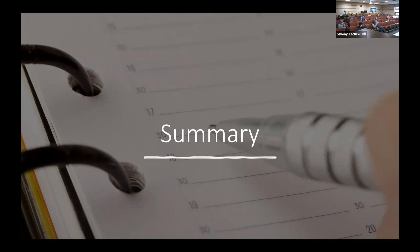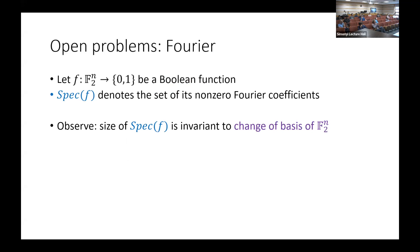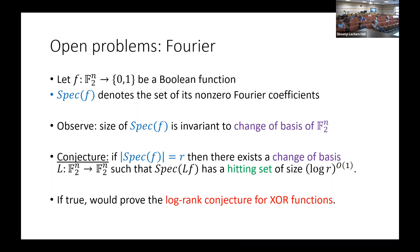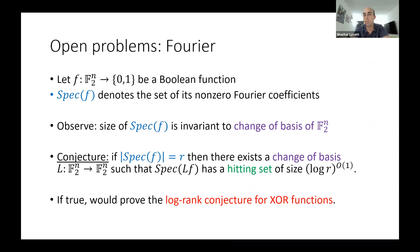Question: In the Fourier conjecture, how relevant is the boolean nature of the function — does it make sense for functions taking values in an interval? Answer: If there's no constraint on the range, the conjecture fails: x_1 + x_2 + ... + x_n is very sparse but has no small hitting set. If you restrict to a small range — like {0,1} or {0,1,2} — you should get an equivalent statement. The right dependence is probably poly-logarithmic in the sparsity and polynomial in the range size. For AND functions we can prove that such a hitting set exists.